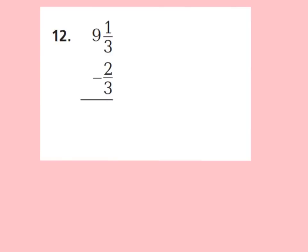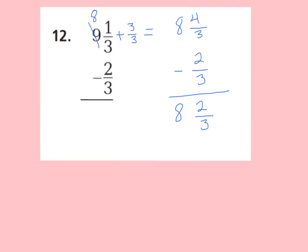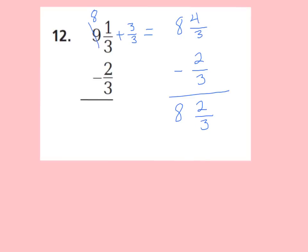For number 12, I want you to work on this one on your own, then press play when you're ready to go over the answer. The problem is 9 and 1 third minus 2 thirds. I can't take away 2 thirds from 1 third, so I renamed: I took a whole from 9 wholes, leaving 8 wholes, and added a whole to 1 third — 1 whole is 3 thirds, so 1 third plus 3 thirds is 4 thirds. Now: 8 and 4 thirds minus 2 thirds — 4 thirds minus 2 thirds is 2 thirds, and 8 minus 0 is 8. The final answer is 8 and 2 thirds.